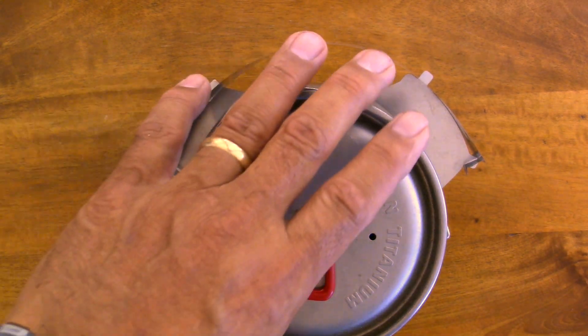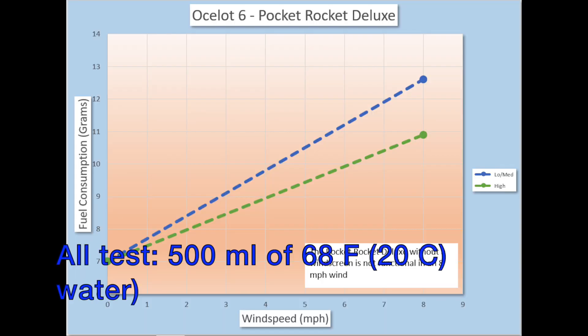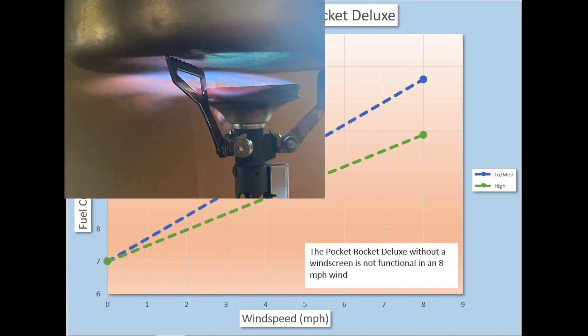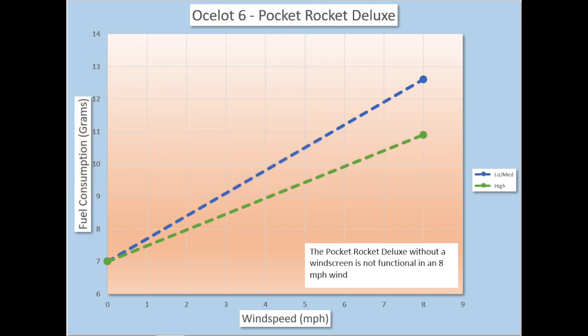So let's go check out the wind tunnel testing. So here's a chart of the wind tunnel results. One thing to note right away is the Pocket Rocket Deluxe in an eight mile an hour wind just really won't boil water. If you take a look at it, the flames barely touch the pot and you can get it boiled, but it's probably going to take 20 minutes or so and consume 30 grams of fuel or something like that.